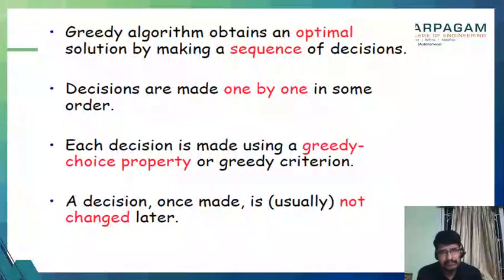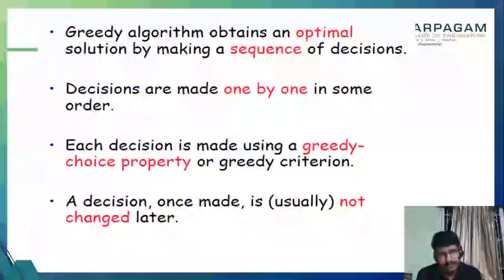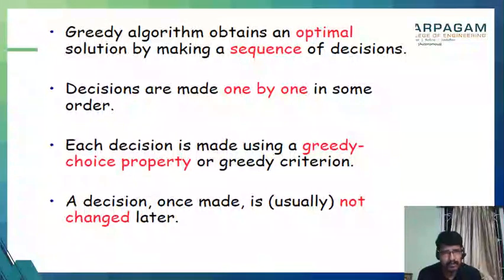A greedy algorithm obtains an optimal solution by making a sequence of decisions. In general, a greedy method makes decisions one by one, and the decisions are made in such a way that that particular decision seems to be the best possible one at the moment. It will consider only that aspect — that's what a greedy method is.